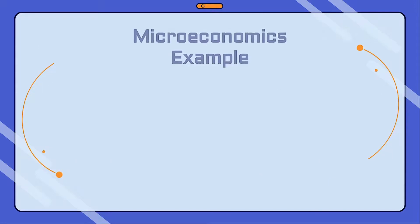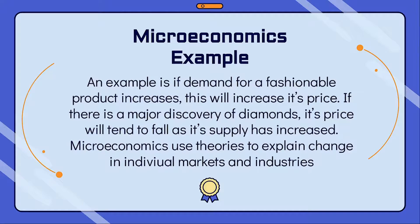An example of microeconomics is if demand for a fashionable product increases, this will increase its price. If there is a major discovery of diamonds, its price will tend to fall as its supply has increased. Microeconomics uses theories to explain the change in individual markets and industries.